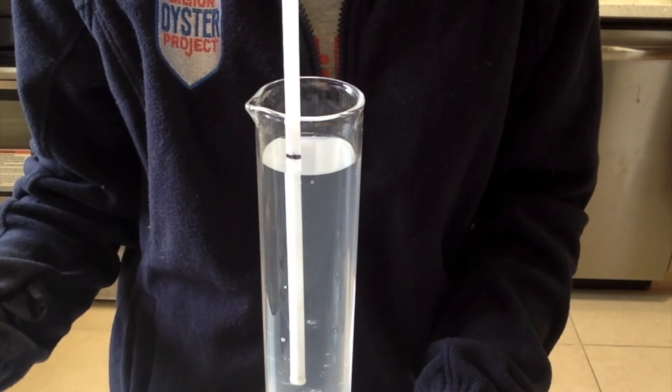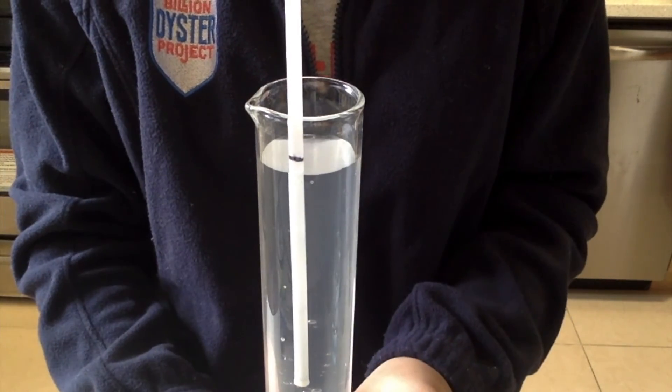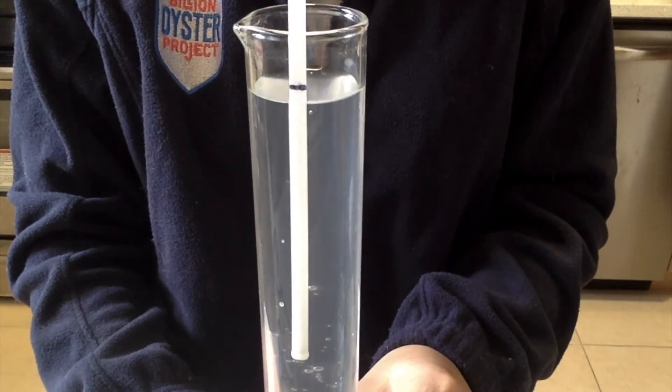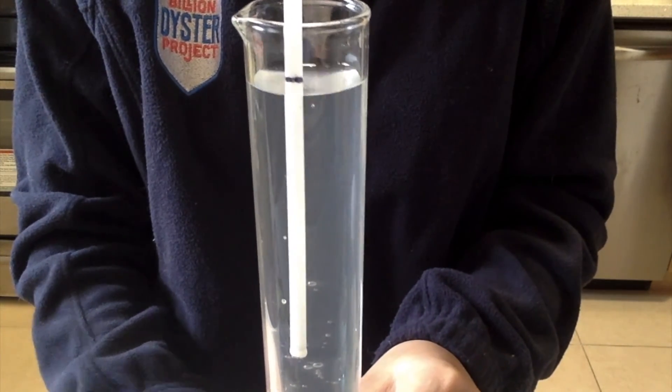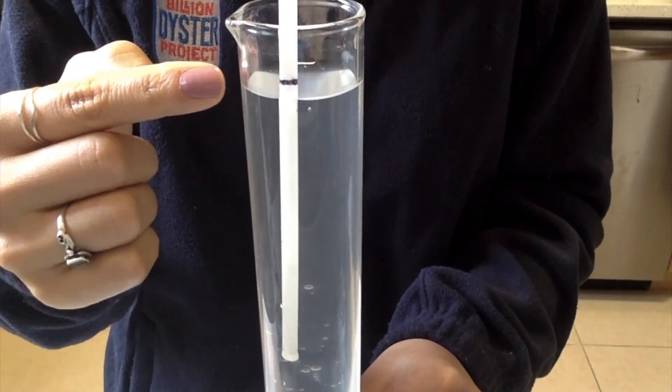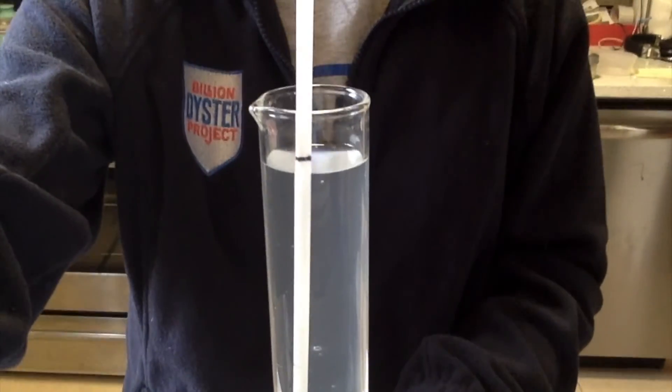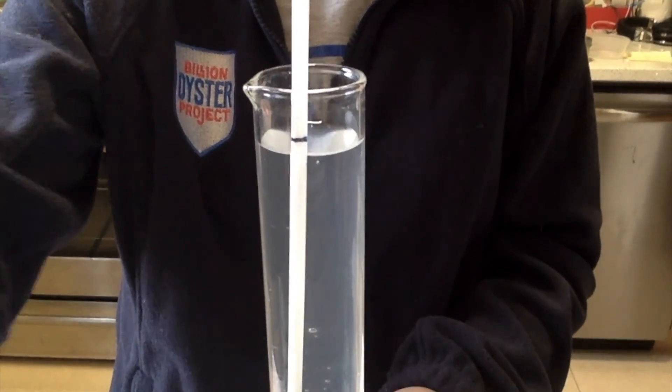As you can see, our hydrometer is floating higher in the water than before. The water line of the salt solution does not meet the black line that we previously drew for regular tap water, and shows that salt water is denser than fresh water.